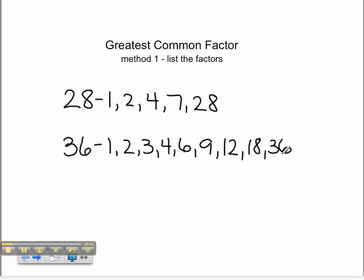Now that we have our factors listed, we can look to see which ones we have in common. That would be 1, 2, and 4. Since 4 is the greatest of these numbers, our greatest common factor is 4.